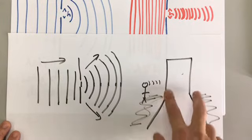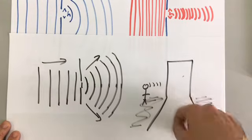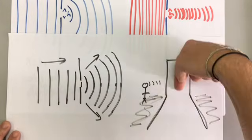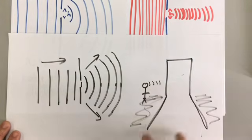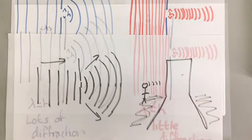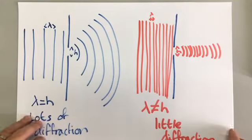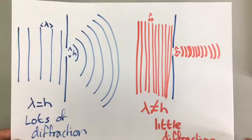And the wavelength of the light waves are not similar to the gap. They are much, much, much smaller than the gap. So the light just keeps coming straight and it doesn't diffract very much. So the amount of diffraction depends on the size of the gap that the wave is travelling through.